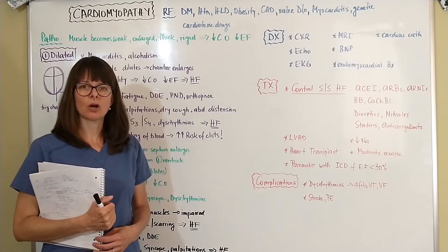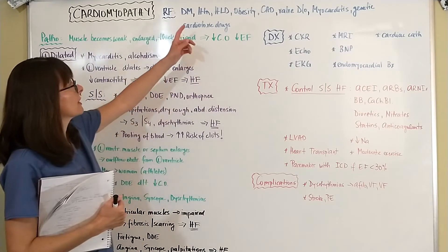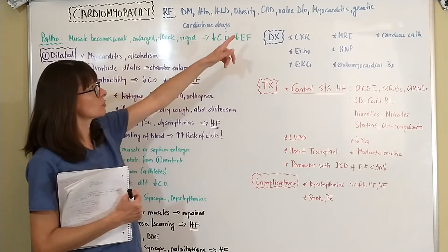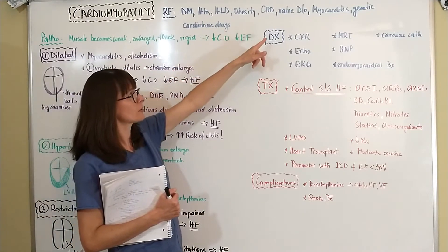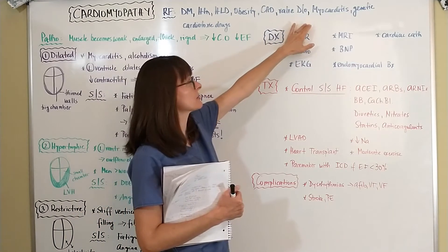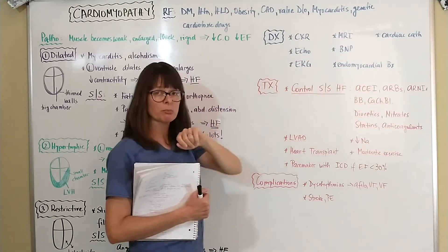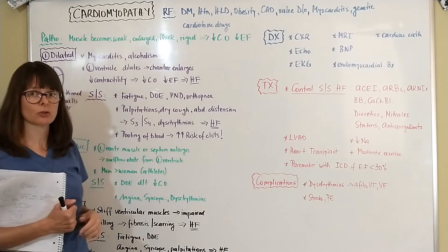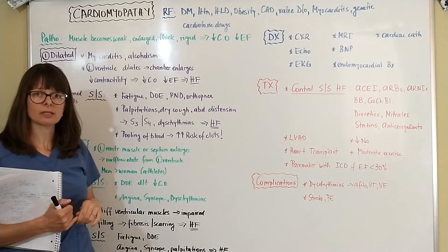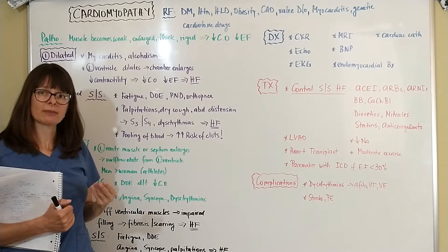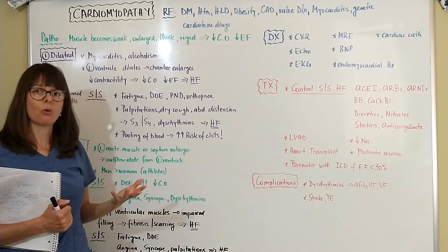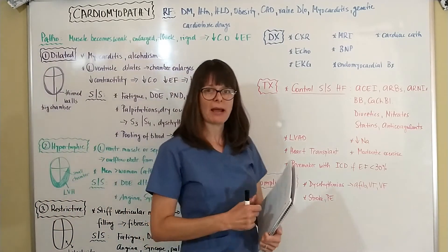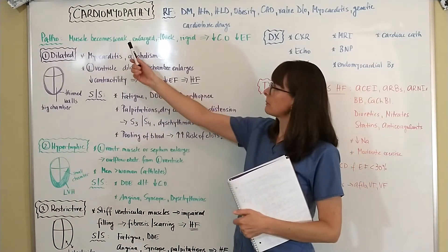Risk factors for developing cardiomyopathy include chronic conditions caused by poor lifestyle such as diabetes, hypertension, hyperlipidemia, and obesity, but also coronary artery disease, valve disorders, and myocarditis — infectious diseases of the myocardium. There can also be genetic causes, and cardiotoxic drugs such as alcohol, cocaine, or methamphetamines.